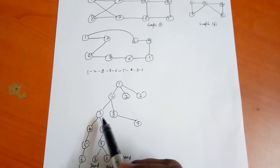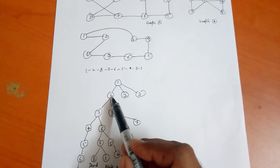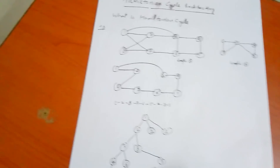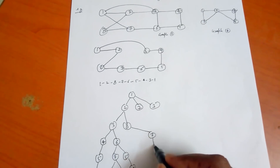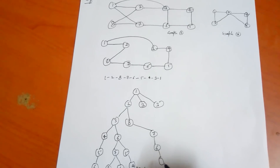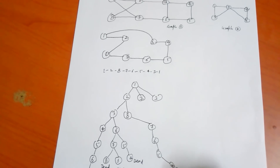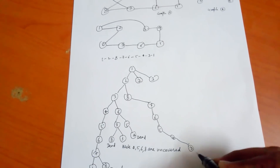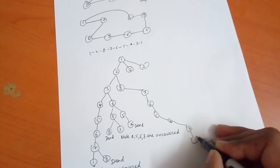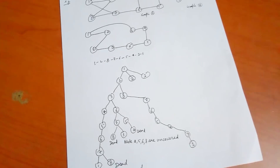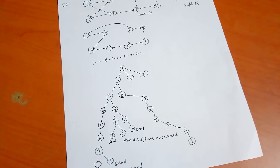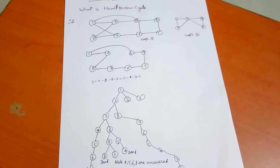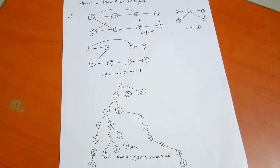We backtrack again and try: 1 to 2, 2 to 8, 8 to 7, 7 to 6, 6 to 5, 5 to 4, 4 to 3, and 3 to 1. This is a Hamiltonian cycle! In this way we can find the Hamiltonian cycle using backtracking — if a path fails, we backtrack to the previous node and explore another path.